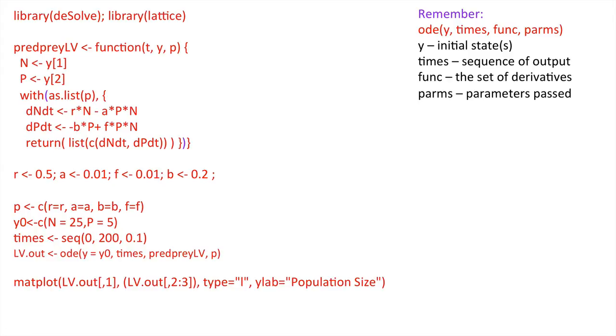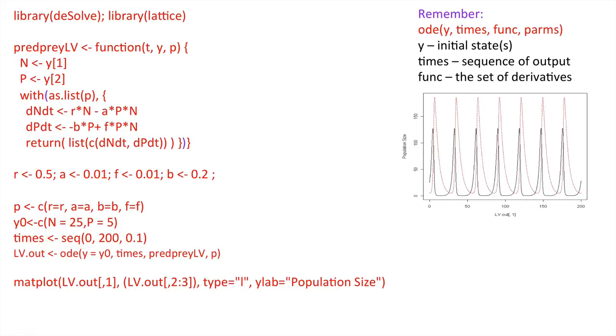Now, if we solve that between 0 and 200 for those particular parameter combinations all it requires us to do now is to plot it out and I've used matplot. The very first part is time and then for LV out the second and third column will be for N and P and by calling up matplot from the lattice this is what we get. The very familiar predator-prey cycles.